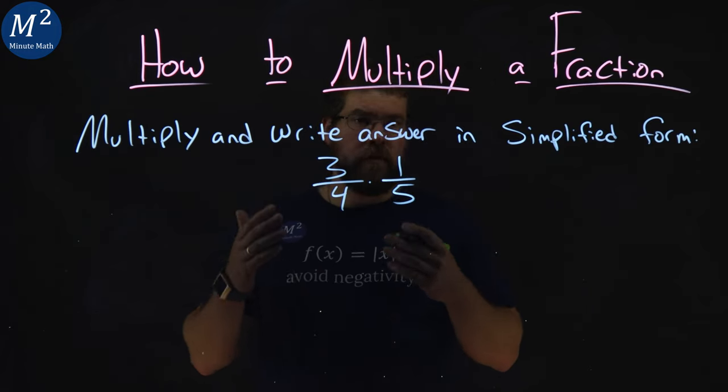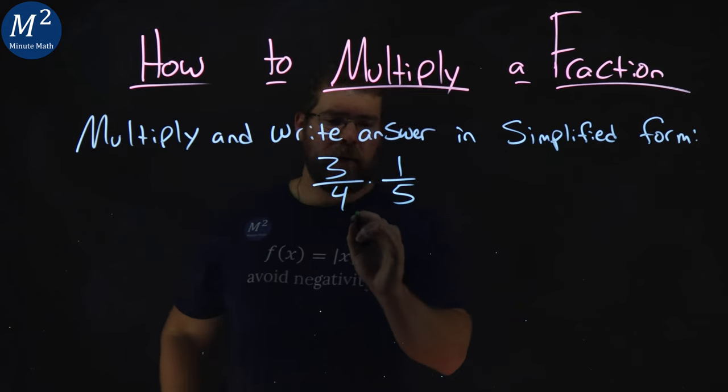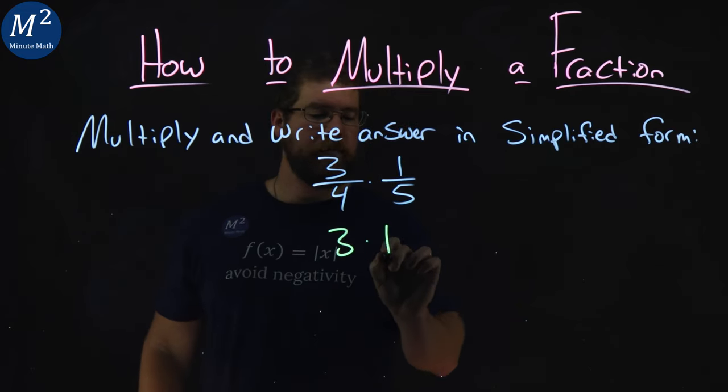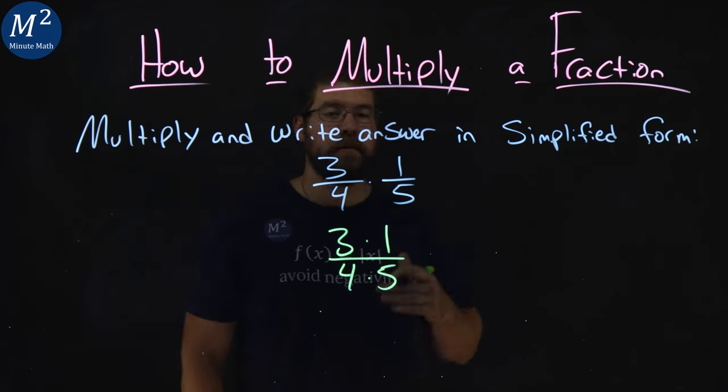To multiply fractions, we multiply across the numerator and across the denominator. So I need to rewrite this to be 3 times 1 across the numerator, and 4 times 5 across the denominator.